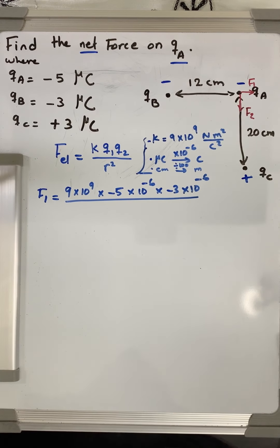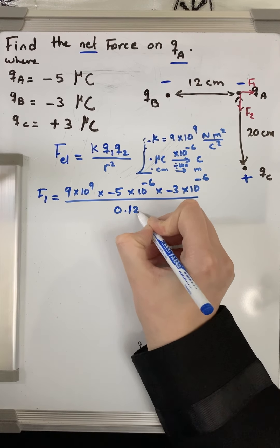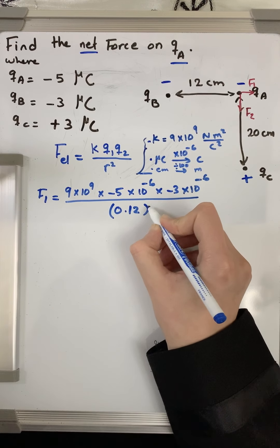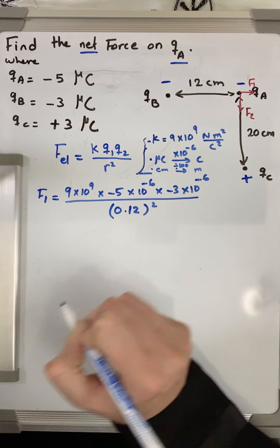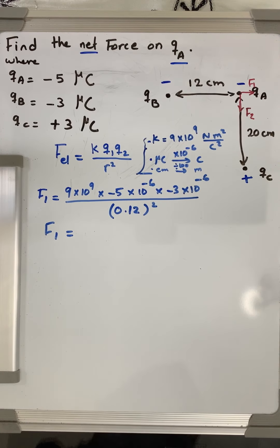So 12 centimeters converted to meters will give me 0.12 meter squared. Using your calculators, you will find that F1 will be...